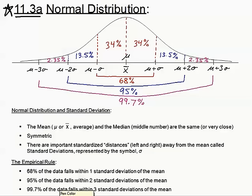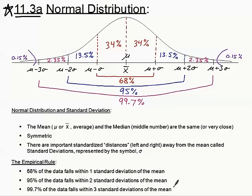That remaining 0.3% is cut in half: 0.15% is in the far upper tail and 0.15% is in the far lower tail — very unusual, freaky data. So the empirical rule is 68, 95, 99.7. That's what you have to remember.